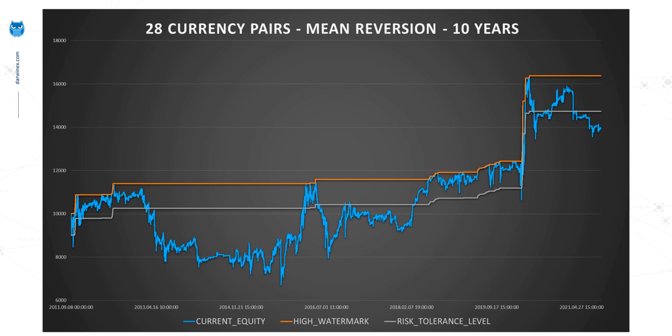The blue curve is the equity level over a 10-year period. The orange line represents the high watermark — the highest amount of equity up until any point in time. The grey line represents a desired risk tolerance, set to 10%. So if the blue equity curve falls and reaches the grey line, it means we're currently in a 10% drawdown. Ideally we want that blue line to stay between the orange and the grey, which clearly, using all 28 currency pairs, is not occurring.